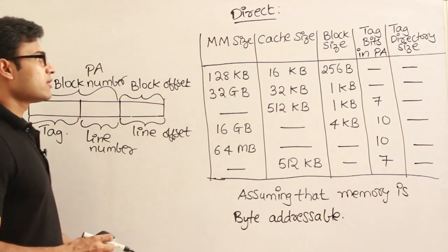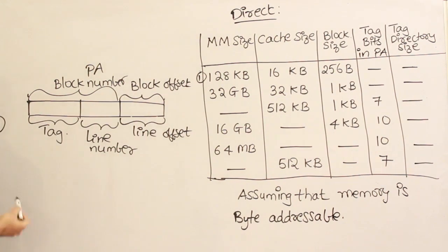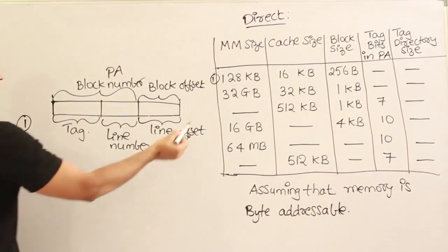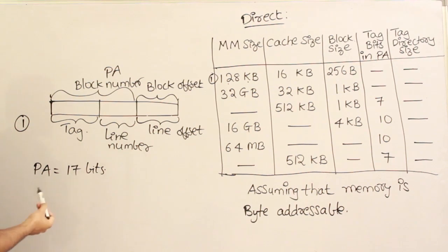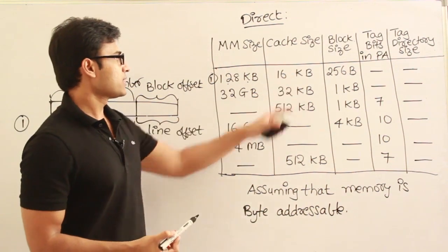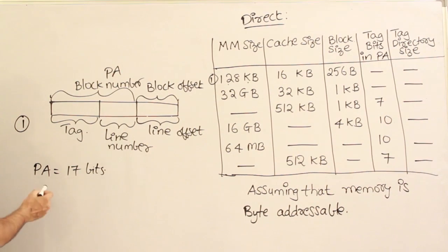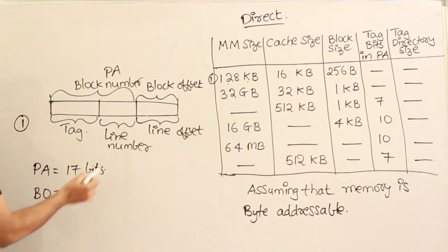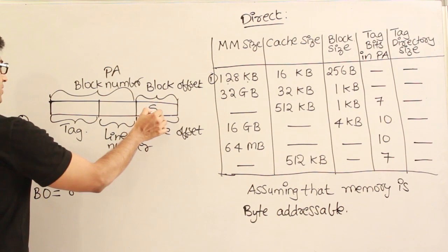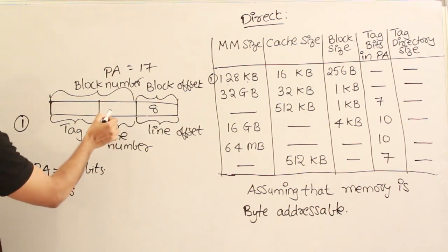Now solving question one: main memory is 128 KB, so the physical address is 128 = 2^7 × 2^10, giving 17 bits. Cache size is 16 KB and block size is 256 bytes. Since block size is 256 bytes = 2^8, the block offset (line offset) is 8 bits. So this part is 8 bits and the total physical address is 17 bits.